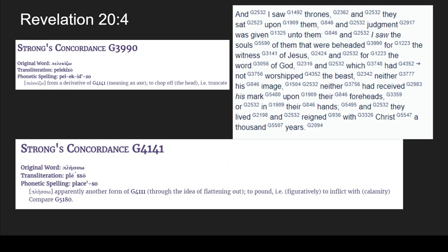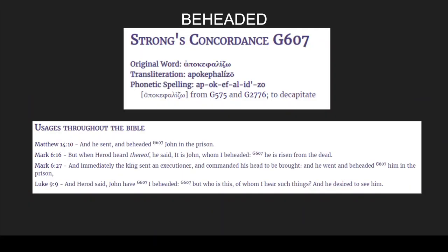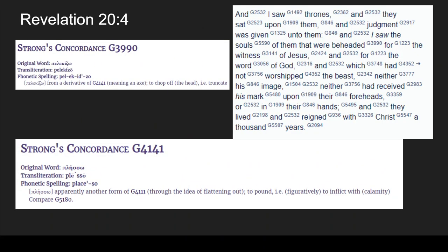When we look in Revelation chapter 20 verse 4, it says: 'I saw the thrones and they sat upon them, and judgment was given to them, and I saw the souls of them that were beheaded.' But this uses G3990 — it's different. The other one was G607. And this is the only instance in which this Strong's concordance number is used throughout the entire Bible.